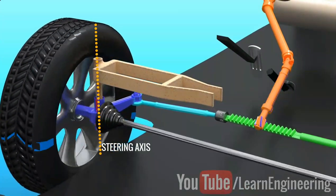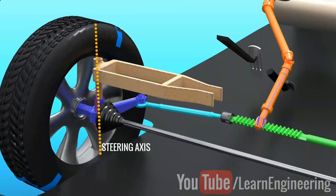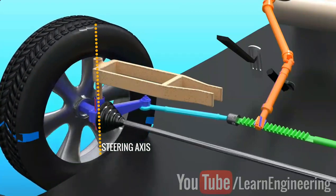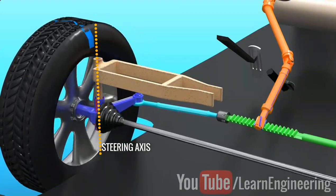In this demonstration, the steering axis is vertical. We can turn the steering wheel in this case.